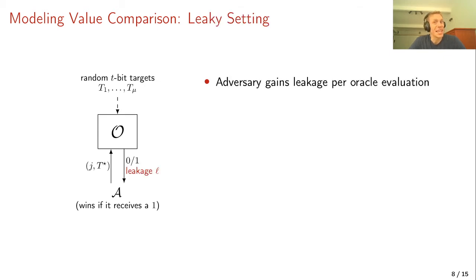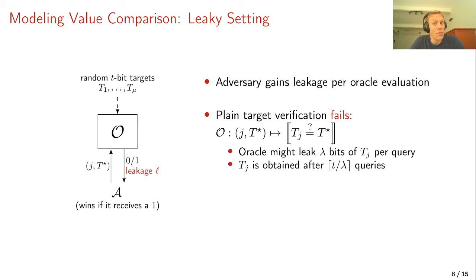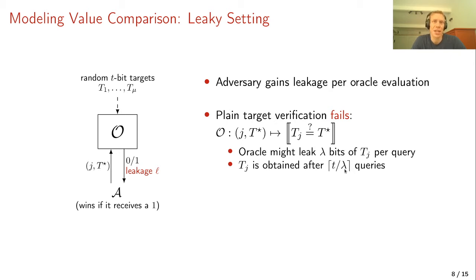But this is black box security. In the leaky setting, the attacker may obtain extra information — every oracle evaluation might leak information about the secret targets t. In this case, plain target verification fails. Every oracle evaluation might leak up to lambda bits of information about t_j, so after around t divided by lambda queries the attacker might in the worst case have obtained the entire value t_j, making the value comparison trivially succeed. We need a more sophisticated oracle.